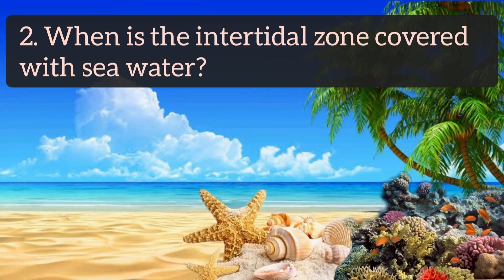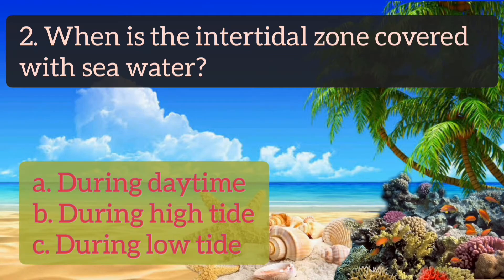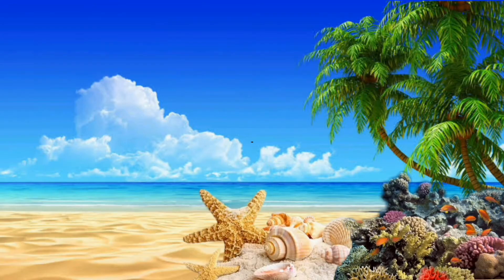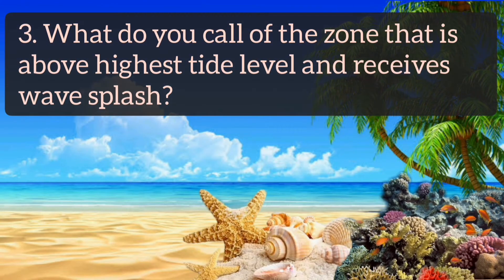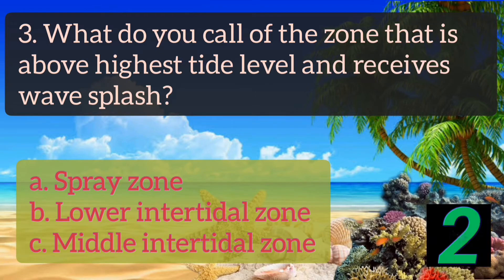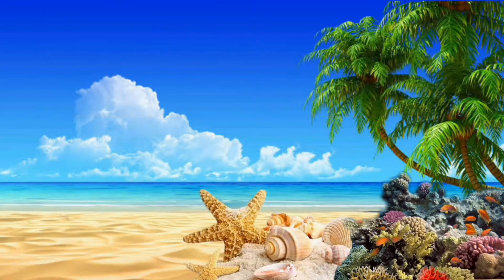Number 2: When is the intertidal zone covered with seawater? A. During daytime, B. During high tide, C. During low tide. Letter B. Number 3: What do you call the zone that is above the highest tide level and receives wave splash? A. Spray zone, B. Lower intertidal zone, C. Middle intertidal zone. Raise your cardboard. It's letter A.